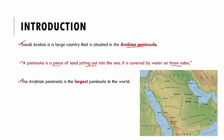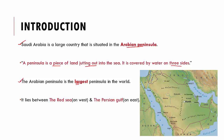The Arabian Peninsula is the largest peninsula in the world — something important to remember. Saudi Arabia lies between the Red Sea on the west and the Persian Gulf on the east. The capital of Saudi Arabia is Riyadh.